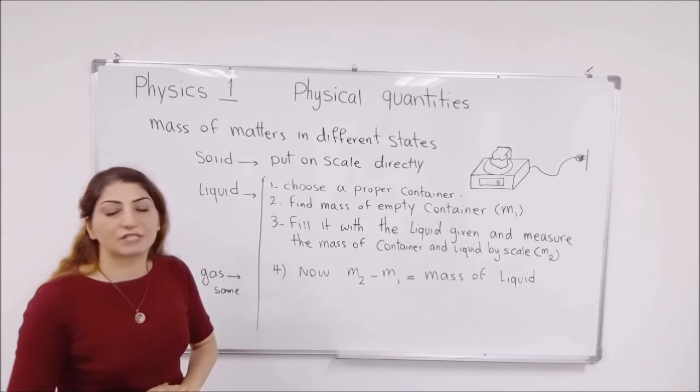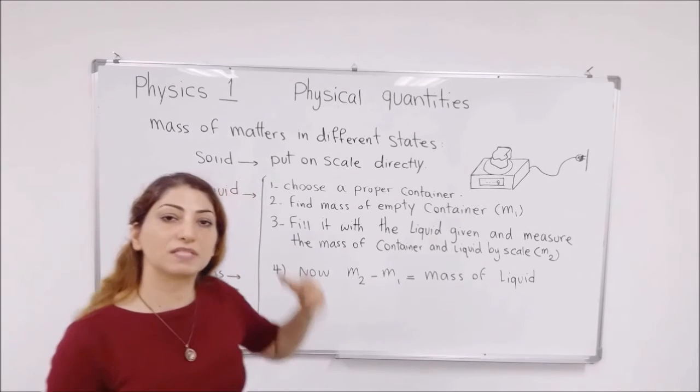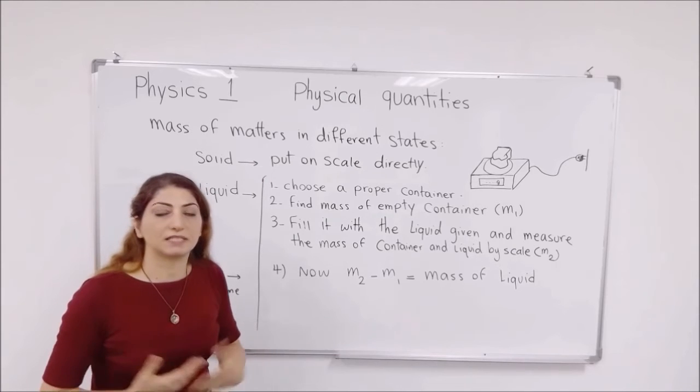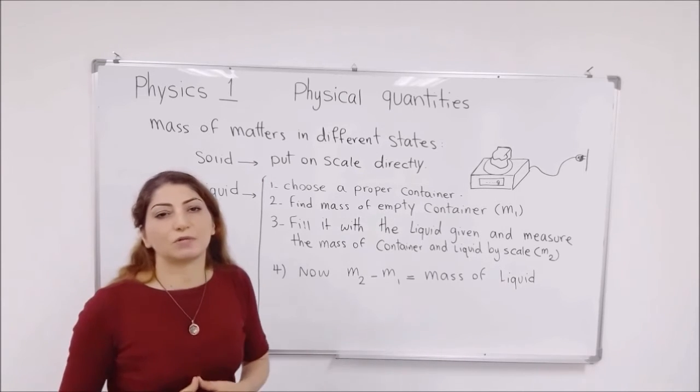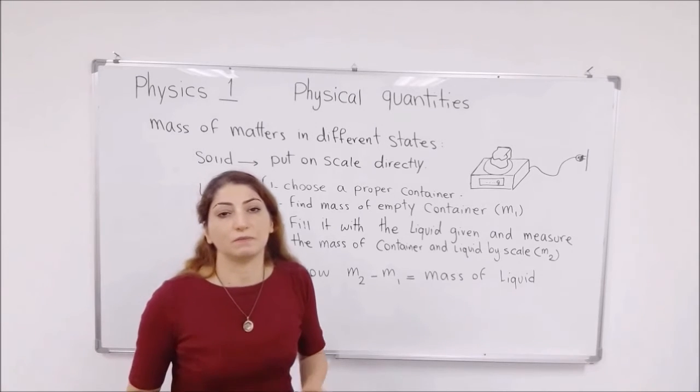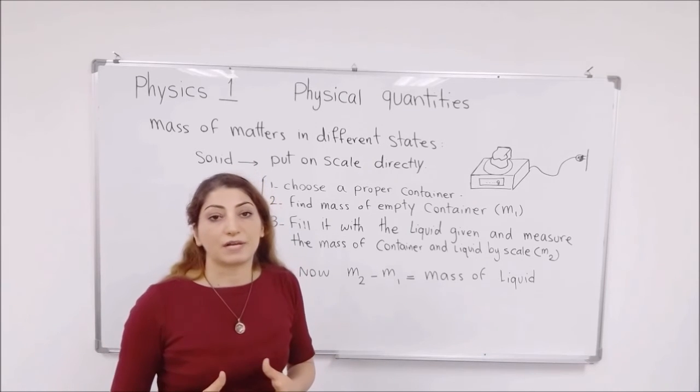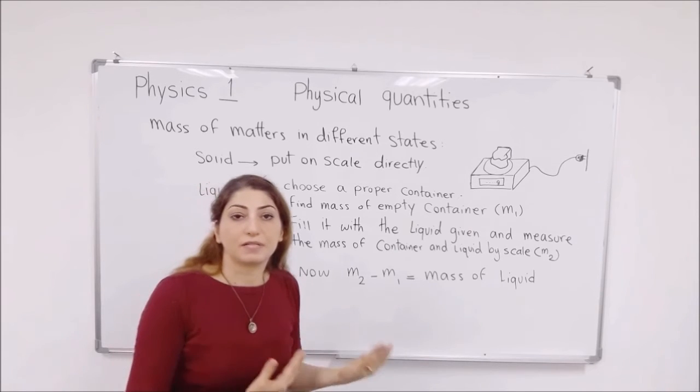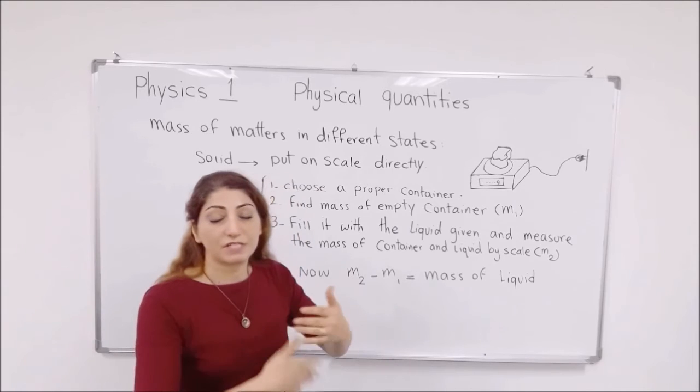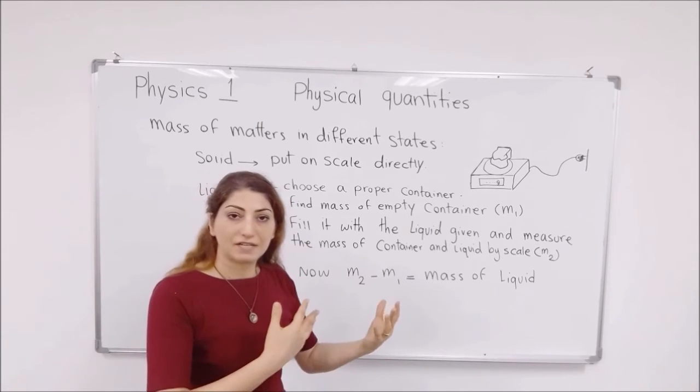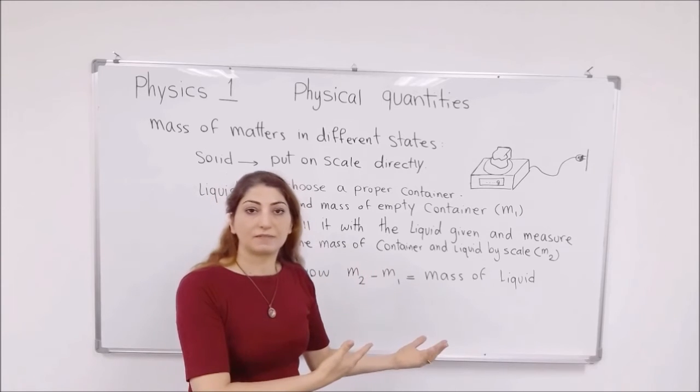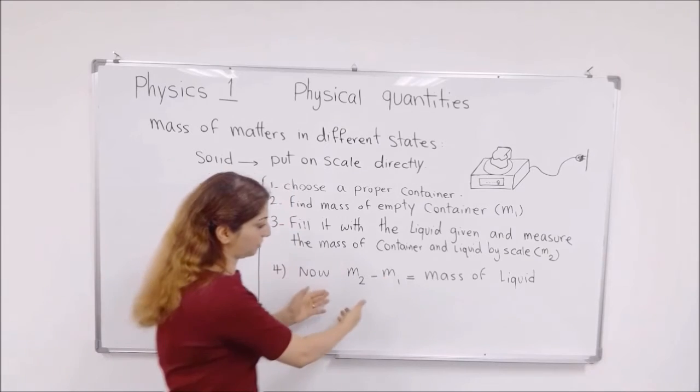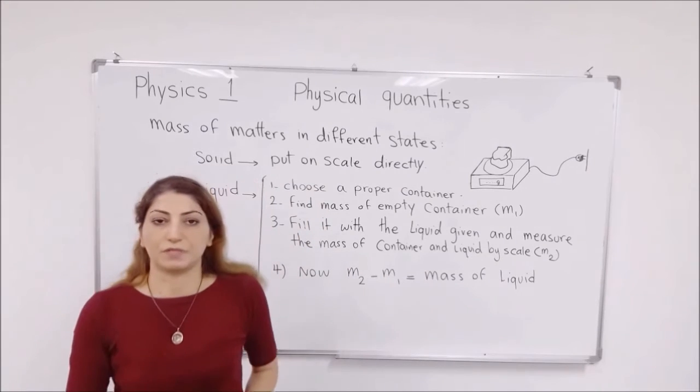For the gas, for the gaseous objects, we have to follow the same procedure. This time we have to find a proper container again. For example, you have some amount of air or gas in a balloon. Then you can first transfer it into a specific container and then measure the empty container, the mass of the empty container. And after it is filled with that gas, then read the second mass of the container plus gas, then use the same formula to deduce the answer.